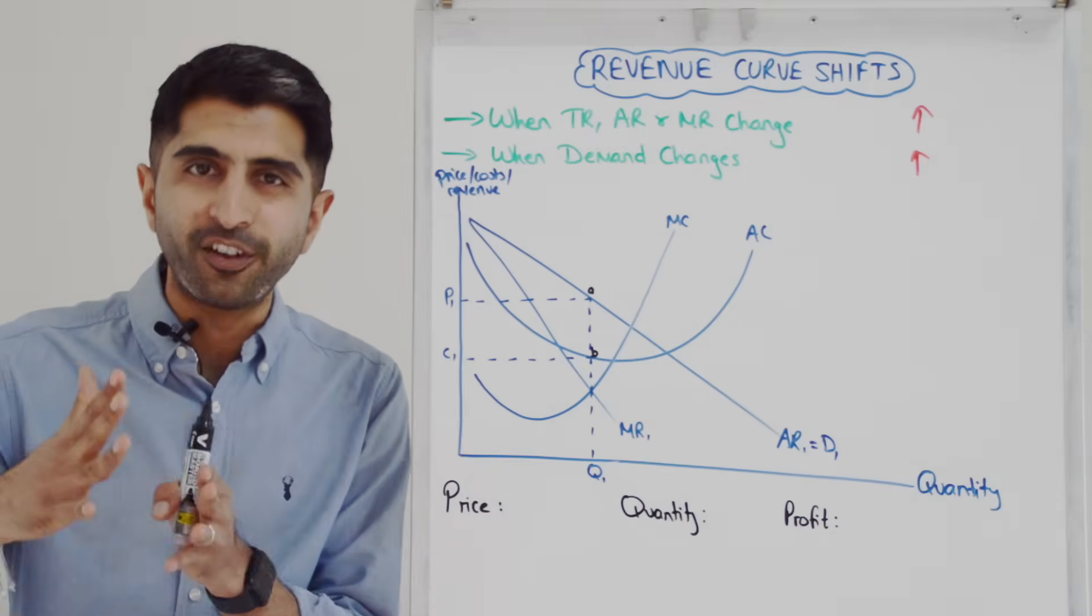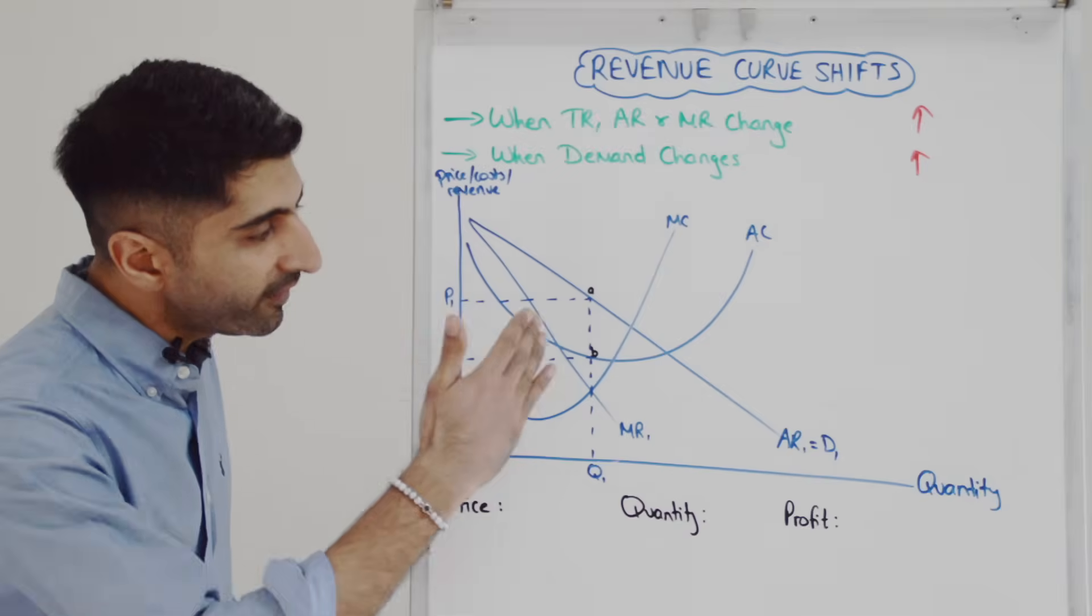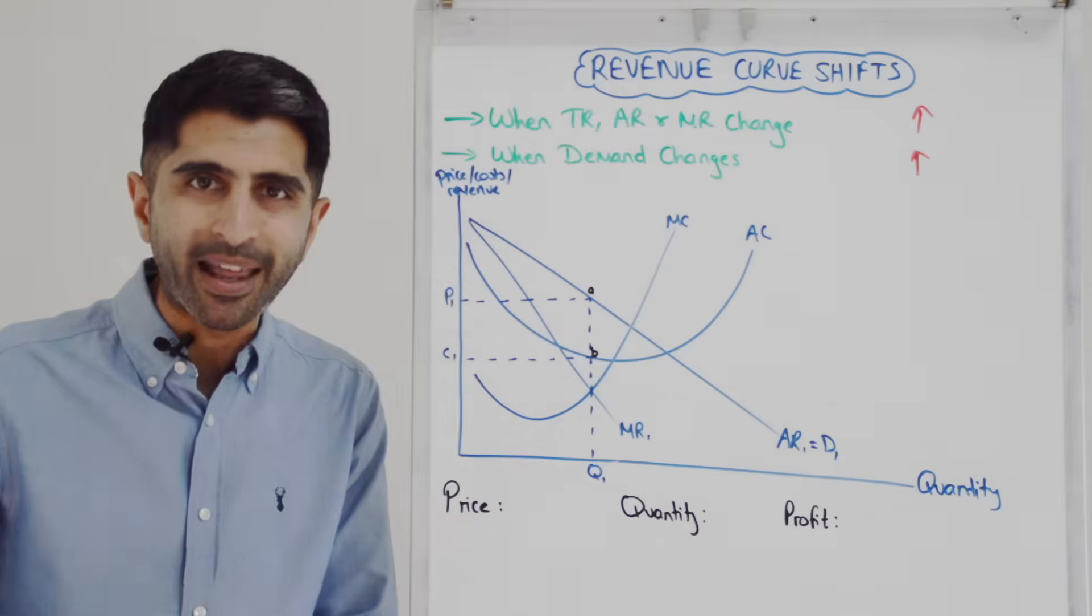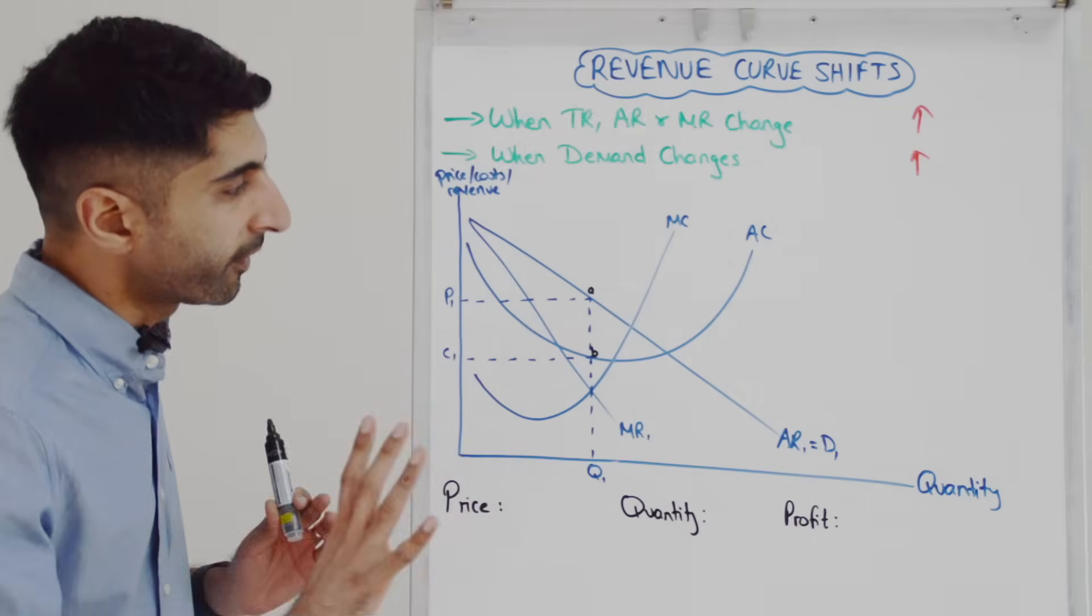If revenue were to fall or if demand was to decrease, you would shift these curves to the left. So in this case, revenue is increasing or demand is increasing for whatever reason. Shift these curves right and let's see what the outcomes are.